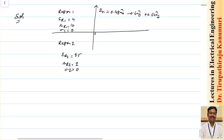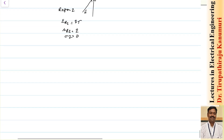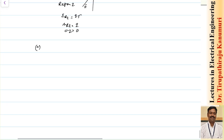H1 is entering at the boundary at some angle, having both normal and tangential components. To find the normal component Hn1, we take the projection of the vector in the normal direction by taking the dot product of H1 with the unit normal vector.